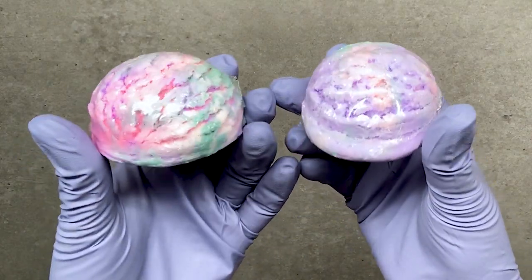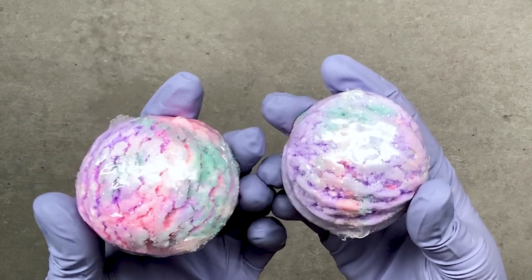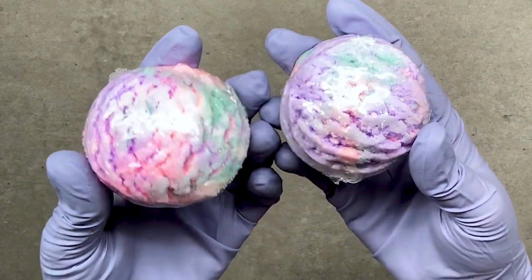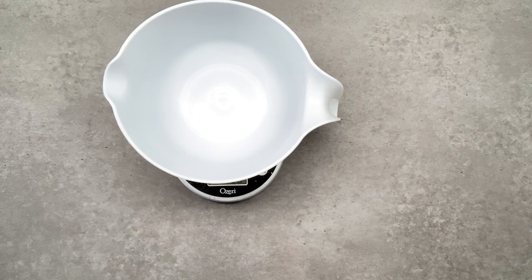Hi, I'm Katherine with the Old Country Porch and today I'm going to be showing you a step-by-step tutorial along with the recipe for how I make my unicorn bubble scoops. The first ingredient is 11 ounces of baking soda.